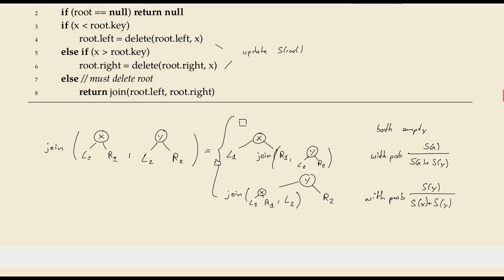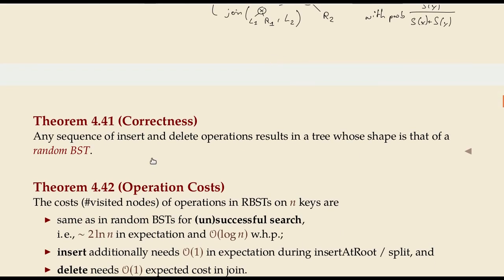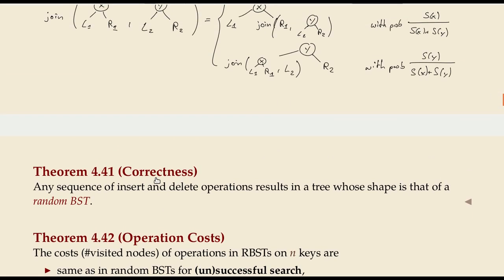This procedure has the property that if the input trees have a random BST shape with respect to their keys, then the resulting tree will also be a random BST. This is summarized in the first theorem: whenever we have any sequence of insert and delete operations, the resulting tree is still a random BST. So randomized BSTs have the same shape as random BSTs — that's maybe the shortest way to state it.